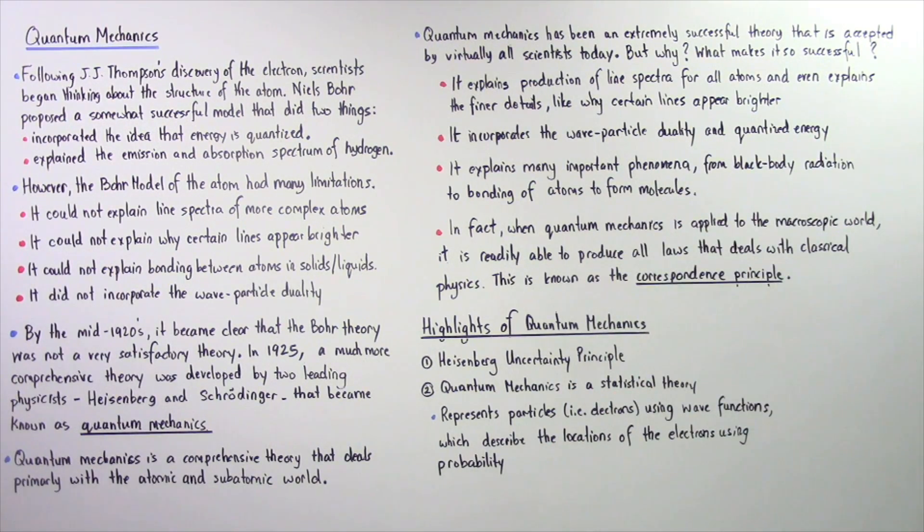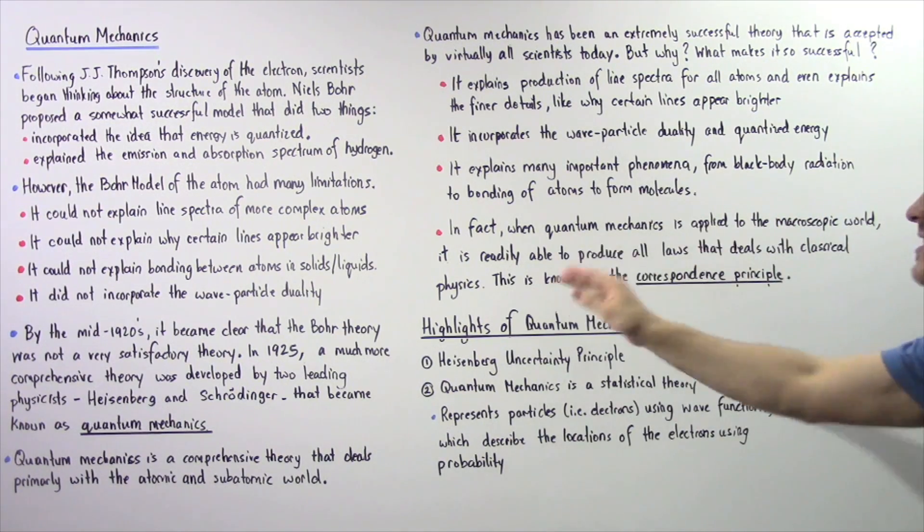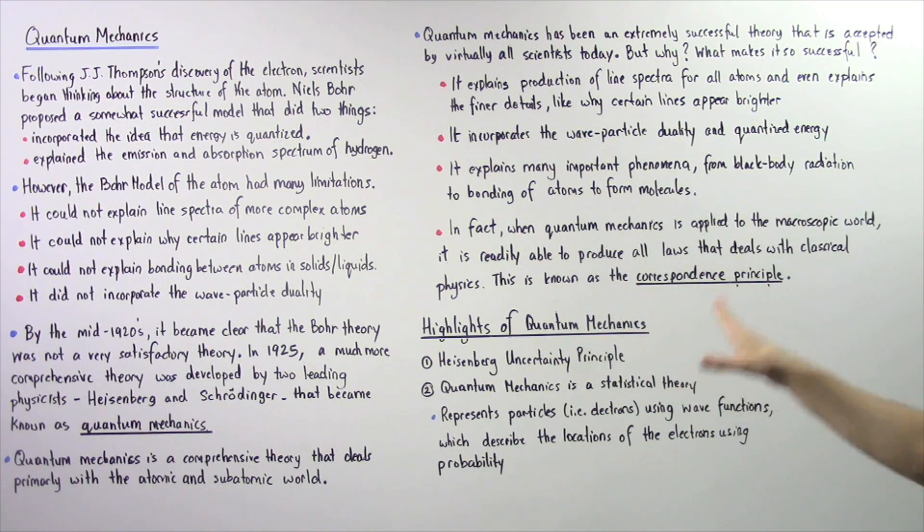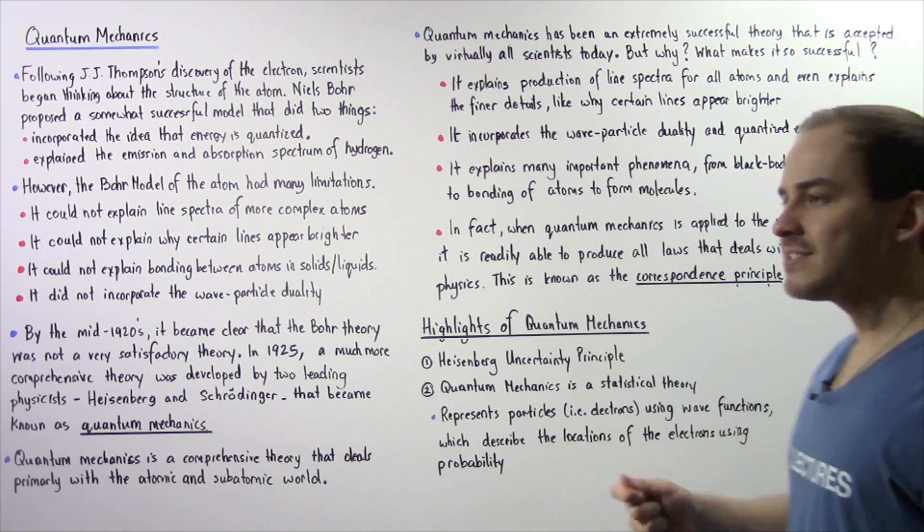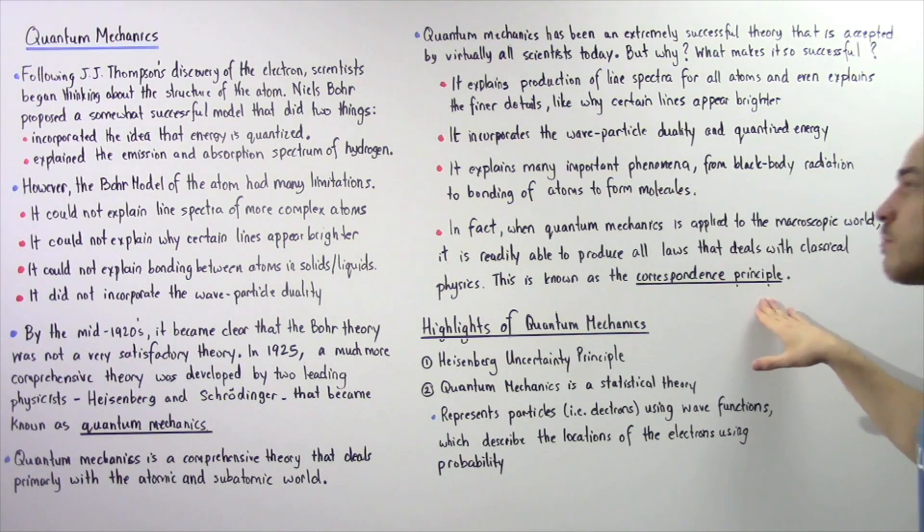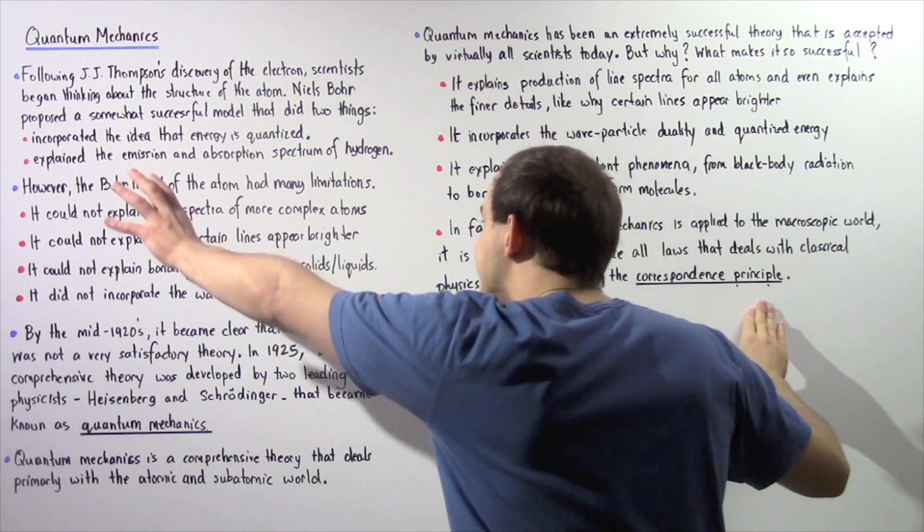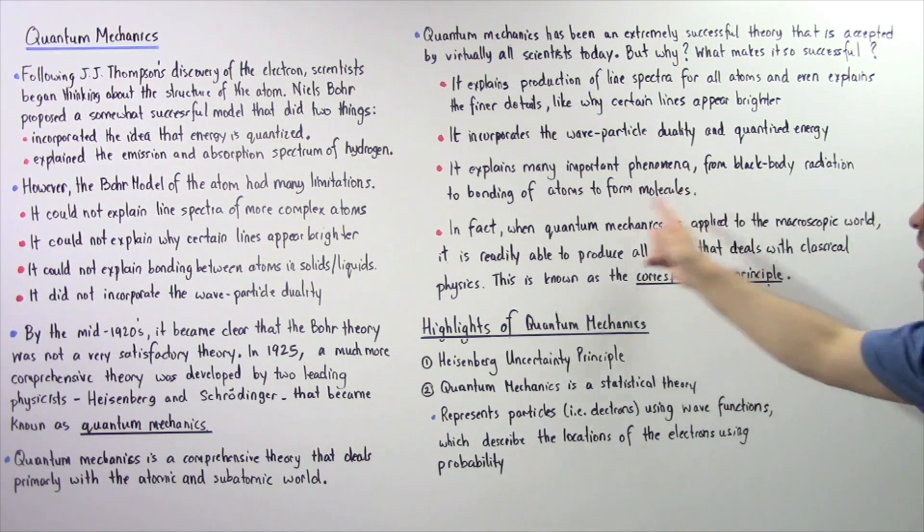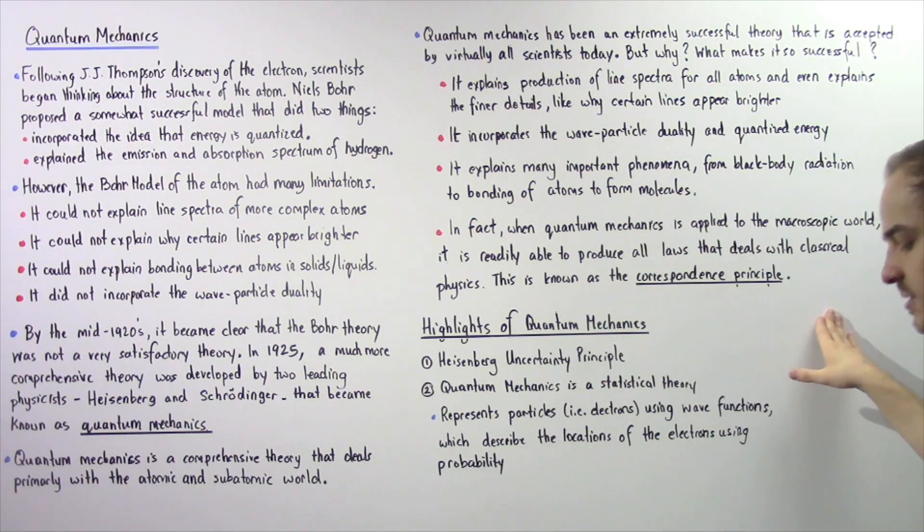In fact, when quantum mechanics is applied to the macroscopic world, it is readily able to produce all the laws and equations that deal with classical physics. And this is known as the correspondence principle. So quantum mechanics basically obeys the correspondence principle.